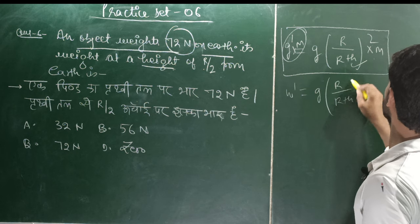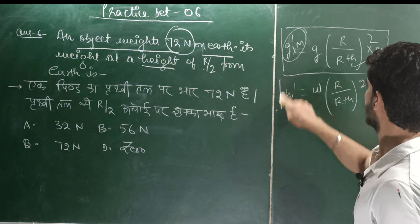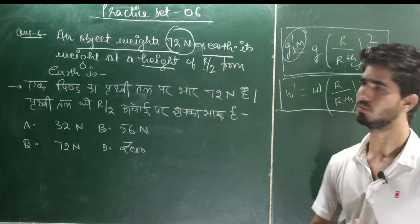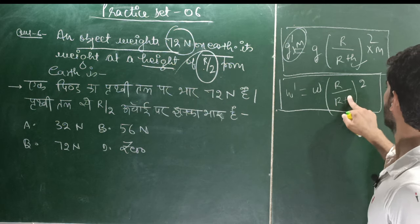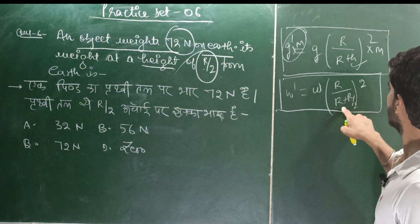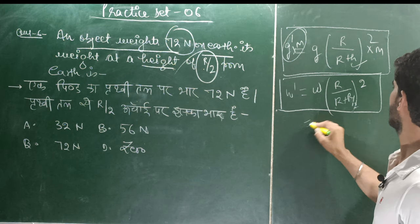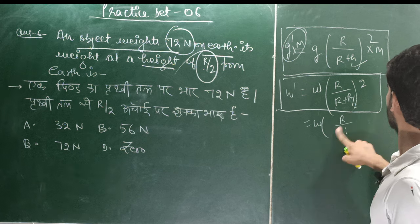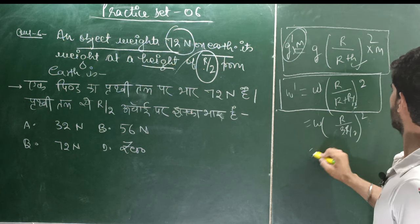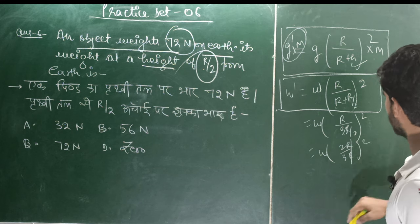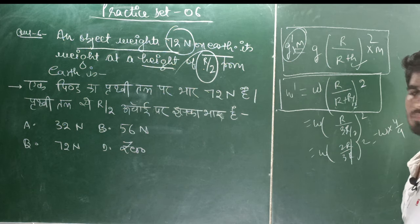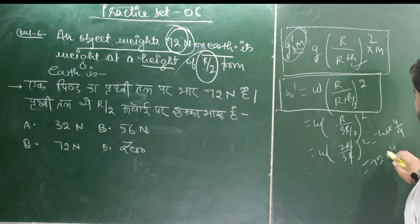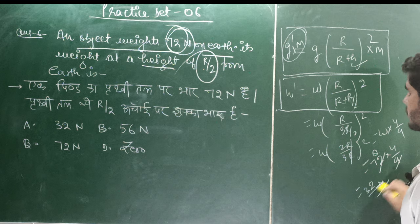Substituting h = R/2: W' = W × [R/(R + R/2)]² = W × [R/(3R/2)]² = W × [2/3]² = W × 4/9. Since W = 72 Newton: W' = 72 × 4/9 = 32 Newton. The weight at height R/2 is 32 Newton.